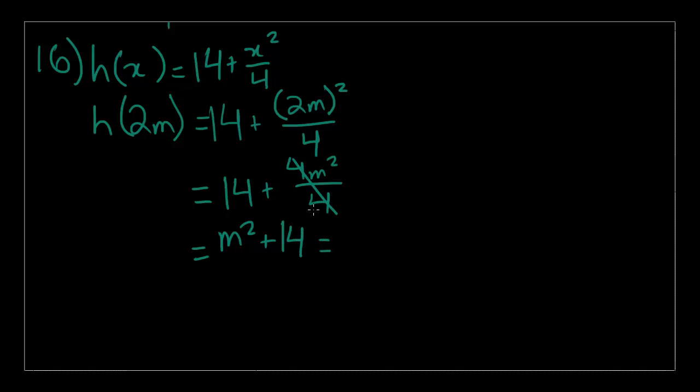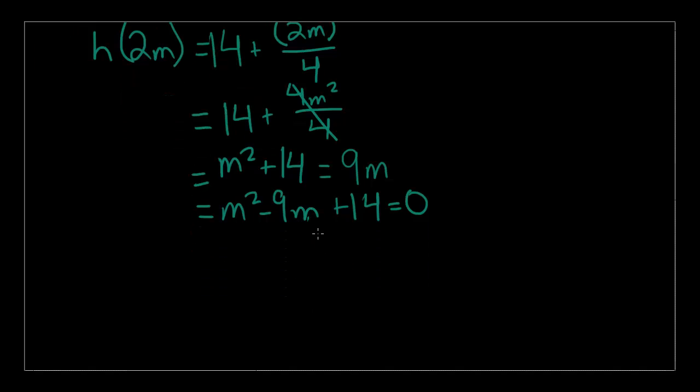Now, m squared plus 14 is equal to 9m and not h of 9m but just 9m. You might notice what the next step is. We just need to subtract 9m on both sides to get m squared minus 9m plus 14 which will be equal to 0. So now we have a quadratic equation.